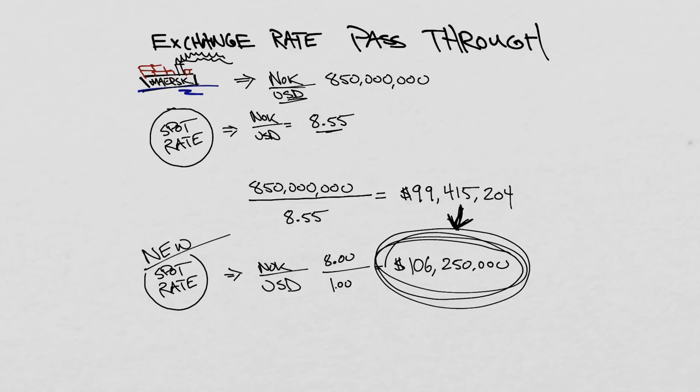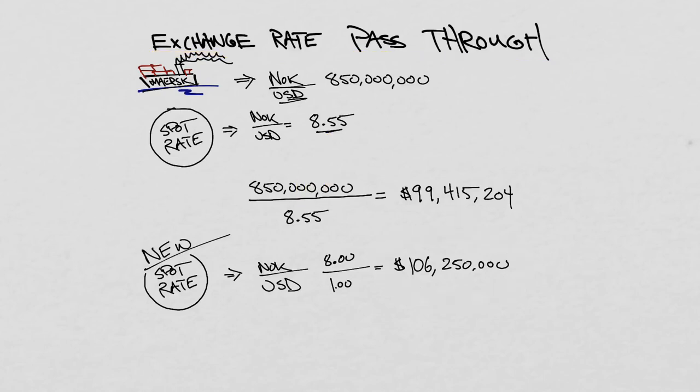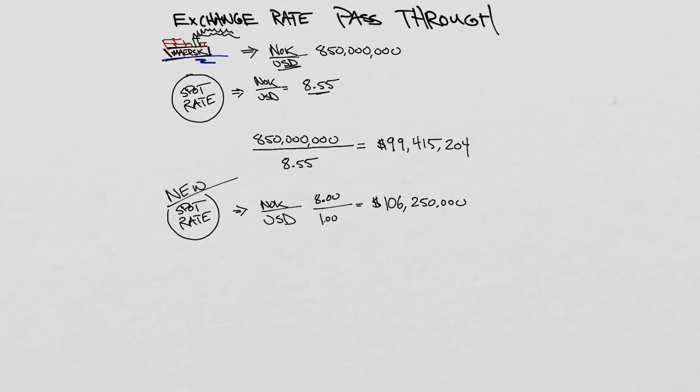In this case, the company, because it knows that it can't raise prices fully to offset this adverse exchange rate movement, will only raise prices by half the amount of the exchange rate movement itself. Because it knows that if it raised prices too much, then its US customers simply just won't buy. Maybe they'll buy from another country that also produces these ships but has a weaker exchange rate at the moment. So perhaps they've decided that they can pass through some but not all of this exchange rate effect when repricing their ships in US dollars.